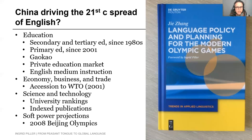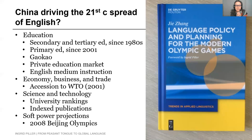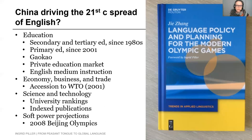Within the education system, English is also spreading as a medium of instruction, which essentially means that content other than the language is taught through the medium of English. Since 2001, the Chinese Ministry of Education has mandated that 5% to 10% of all university undergraduate courses should be taught through the medium of a foreign language. It's not specified that this is English, but in practice it has overwhelmingly been English. English as a medium of instruction is spreading in higher education across the globe — it's extremely popular to study economics, medicine, science, technology, and engineering through English, as it creates a double opportunity to learn both content and language.